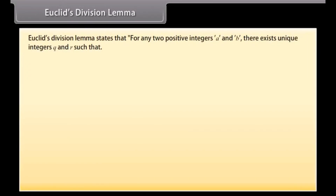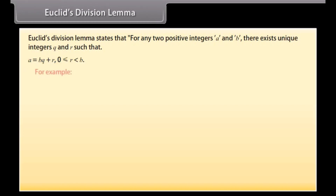Euclid's Division Lemma. Euclid's division lemma states that for any two positive integers A and B, there exist unique integers Q and R such that A is equal to BQ plus R, where 0 is less than or equal to R, which is less than B.